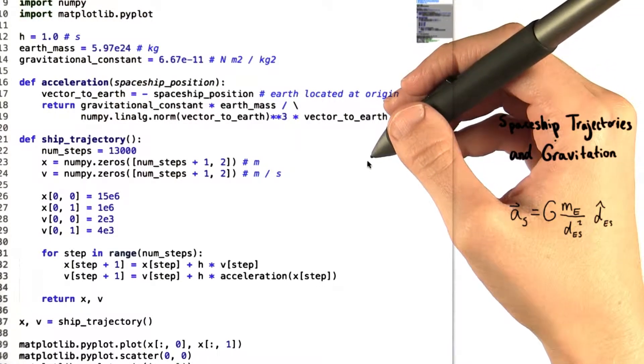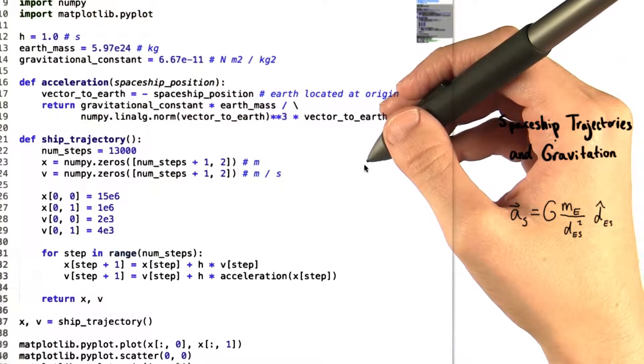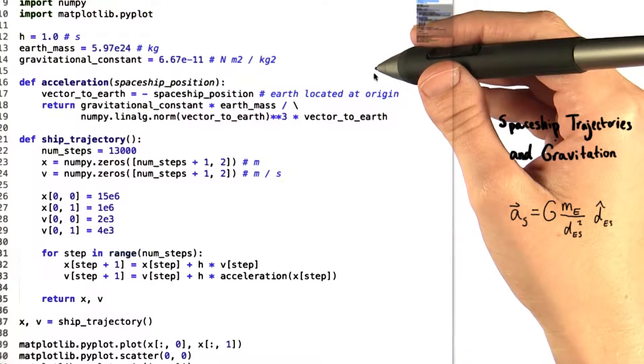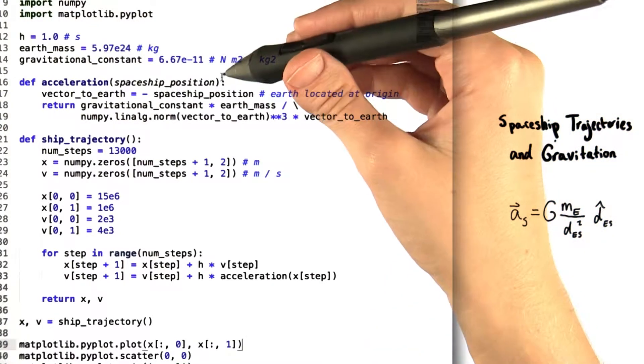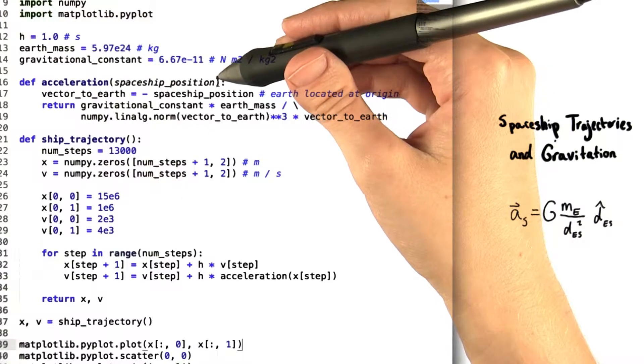Now we're going to look at the solution to this final problem set for unit 1. The first thing we have to do is fill in the definition for the acceleration function. The acceleration function takes an argument that we've called spaceship position.